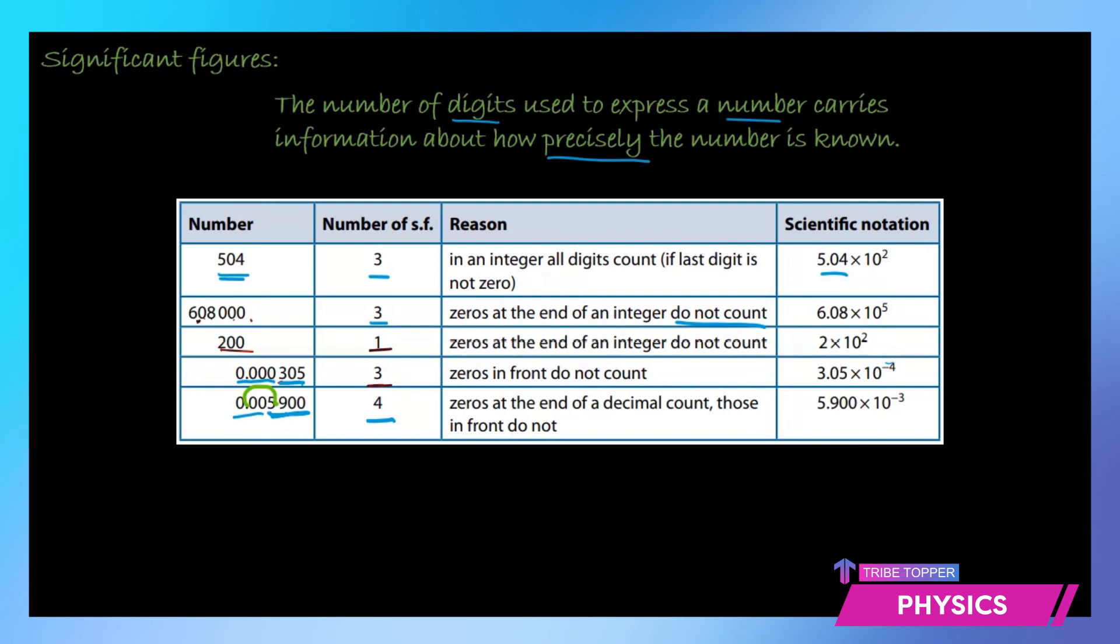When you shift the decimal to the left you always get a positive power. When you shift it to the right you get a negative power. So this is how you count the numbers of significant figures in a given number. I hope all the rules are clear. Thank you for watching. In the next video we shall continue with Uncertainties and Errors.